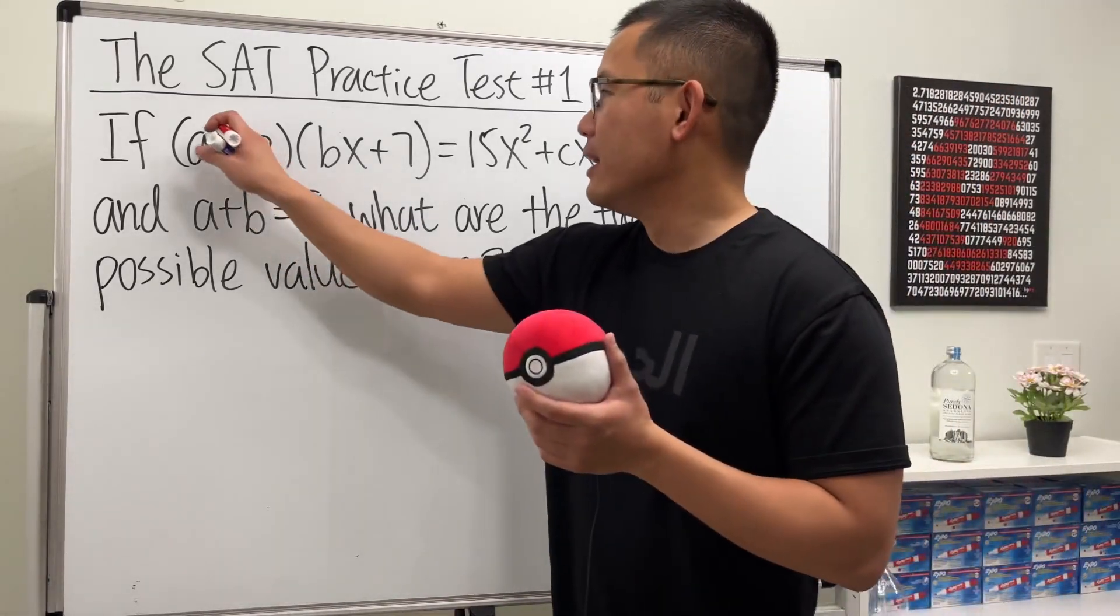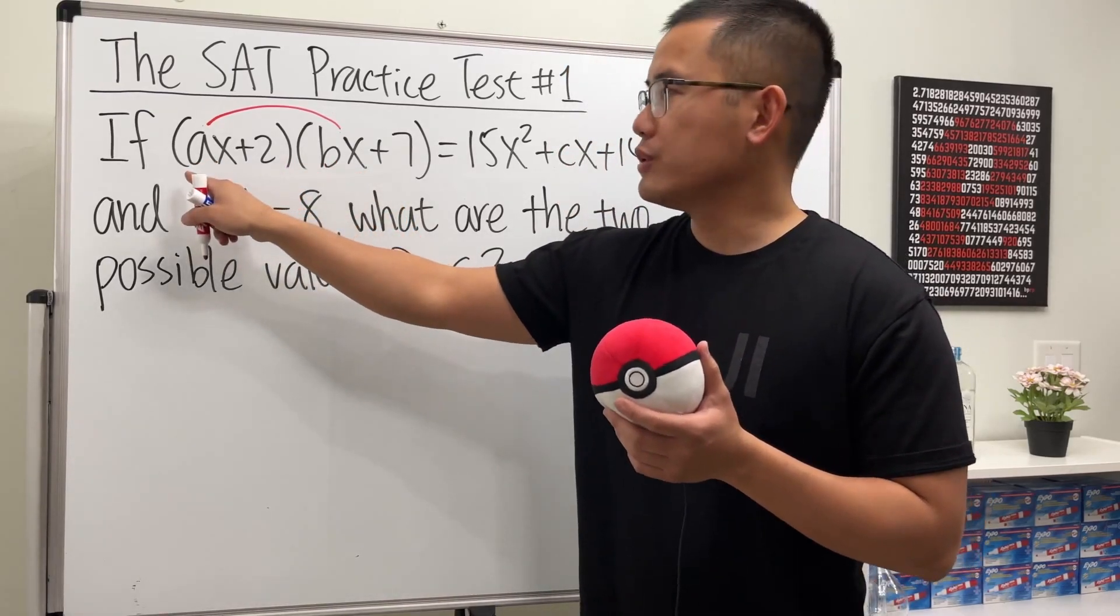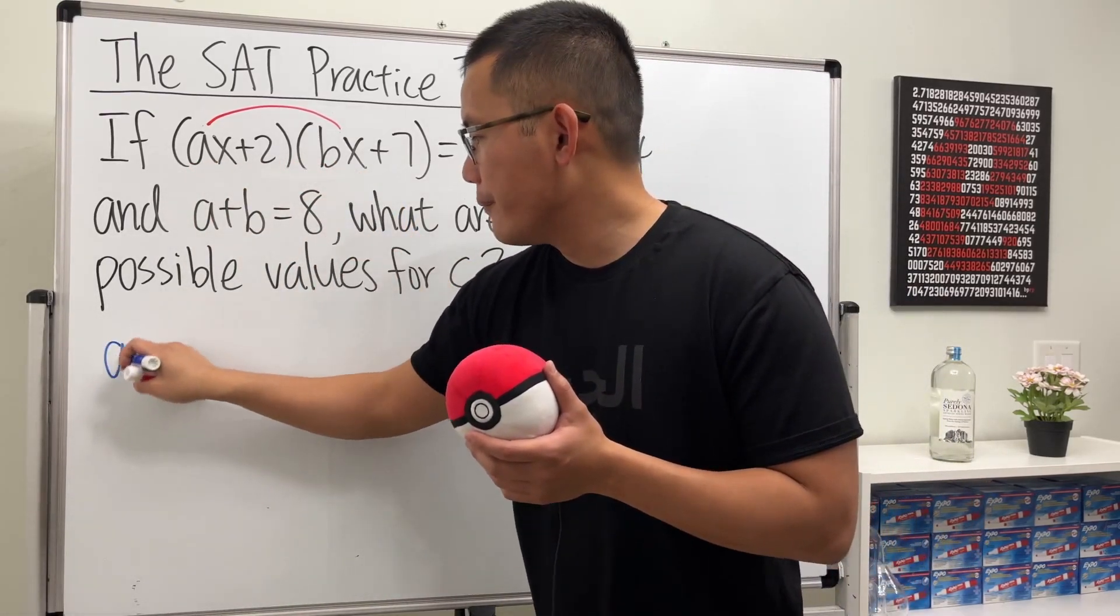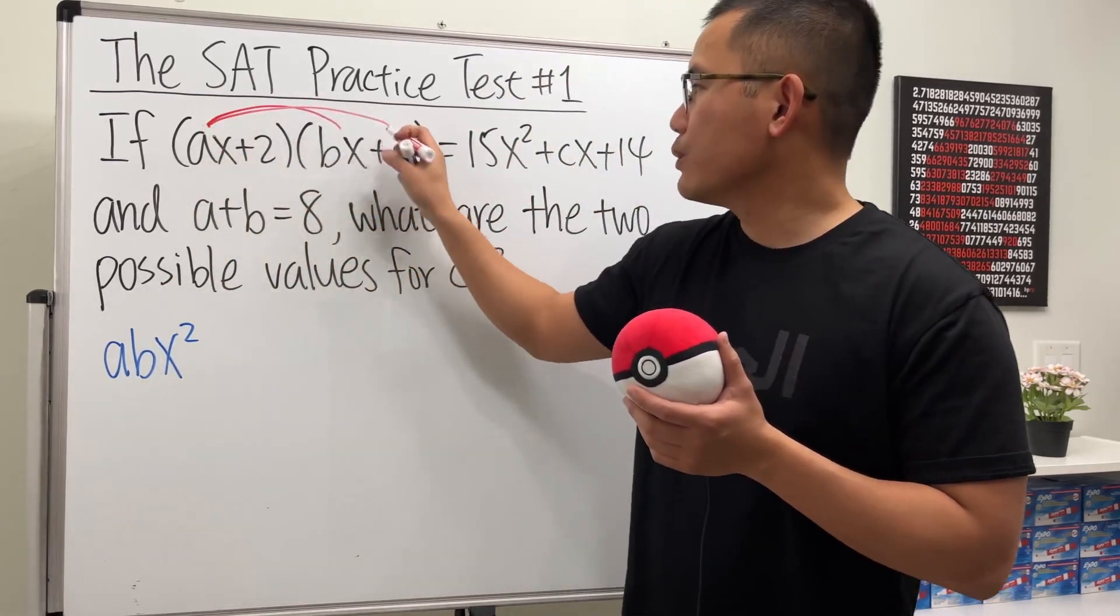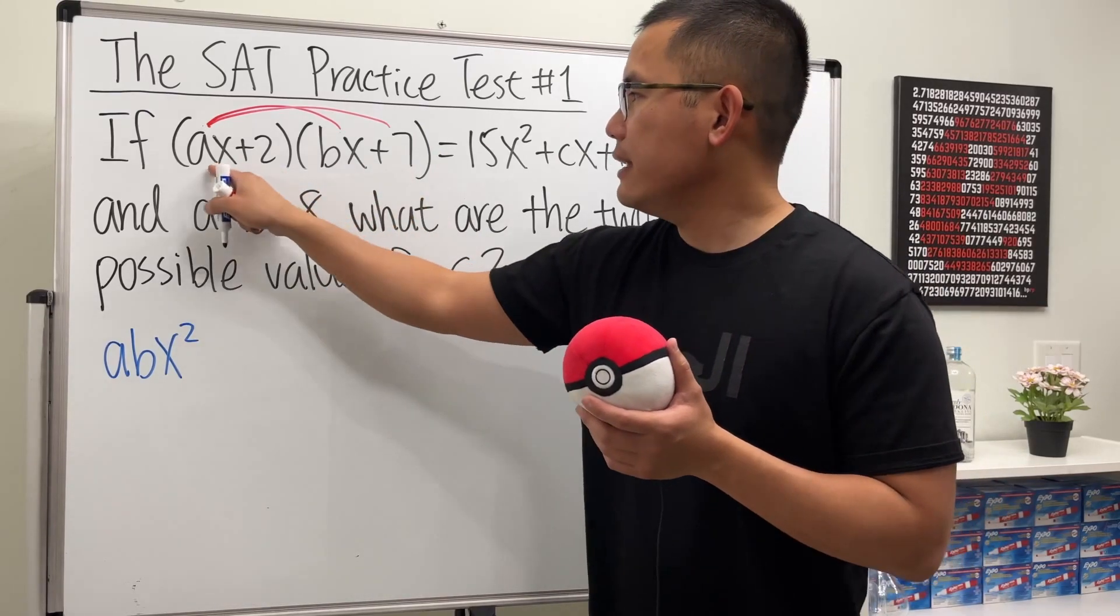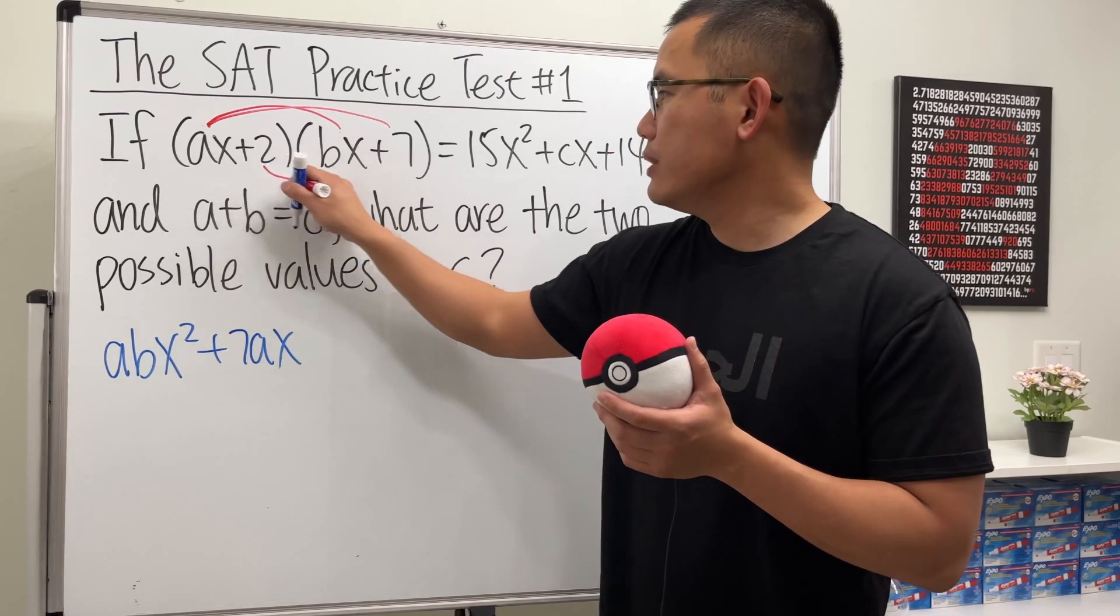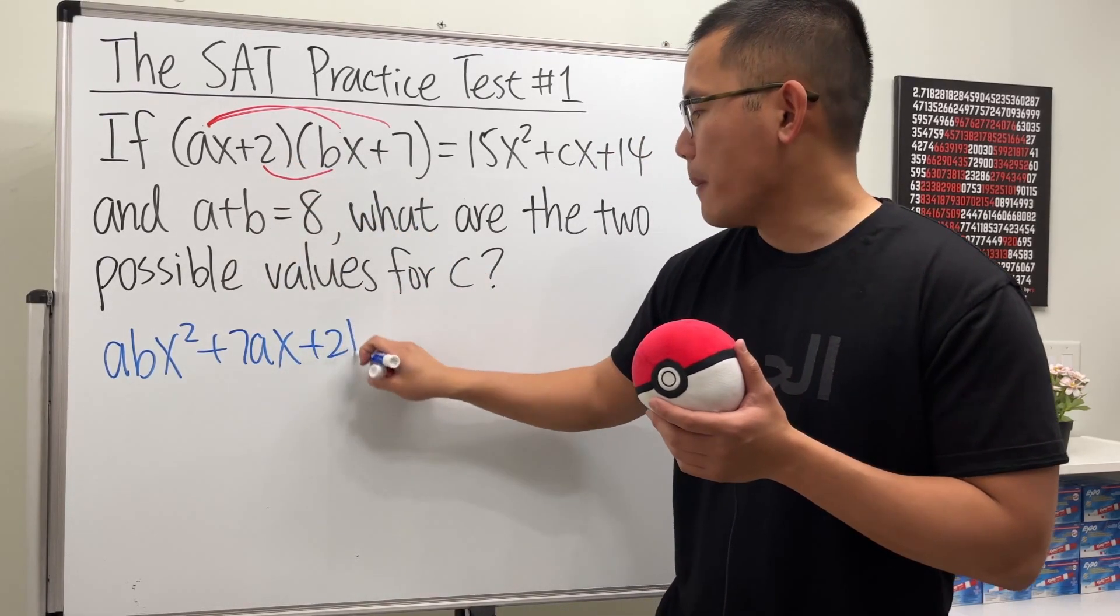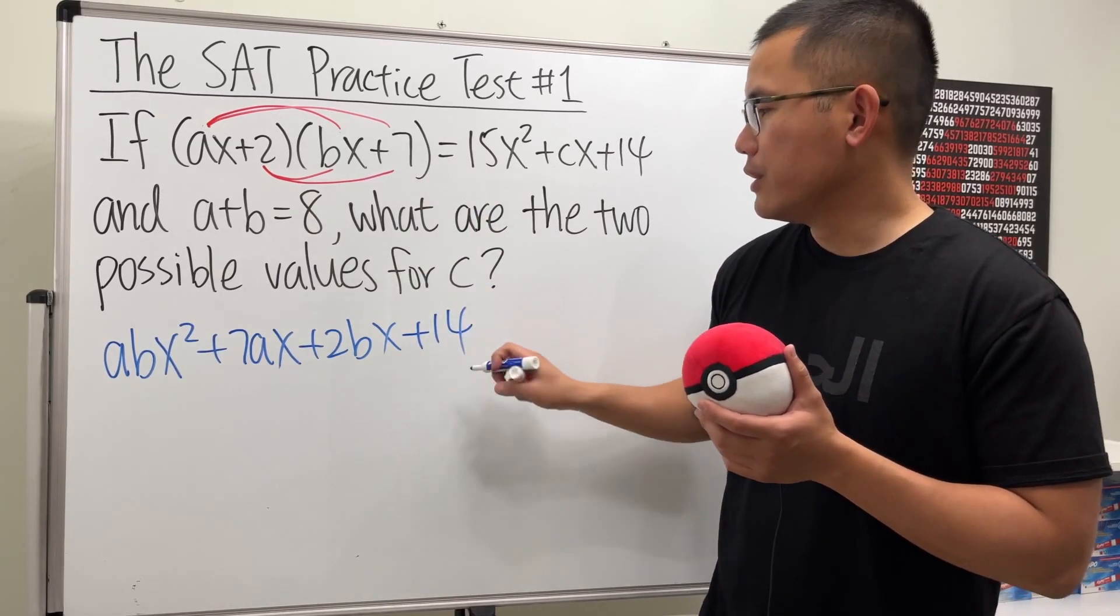So let's go ahead and try that. First we take this times that, ax times bx, we just have a times b, and then x times x, which is x². So that's the first term. And then take this times that, which we get 7ax, and then continue this times that, which is 2bx. And lastly, 2 times 7, which is 14.